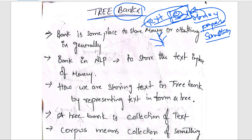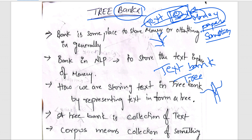So in the tree bank, especially in natural language processing, we store text in the bank — in that place. This is nothing but a tree bank. Everyone might wonder: why can't we call it a text bank? The reason is that text can be represented in the form of trees — with roots, branches, and stem nodes. So in the form of a tree structure, we represent the data, and this tree-structured data is stored in this place. That's why we call it a tree bank.